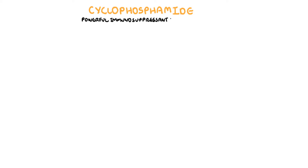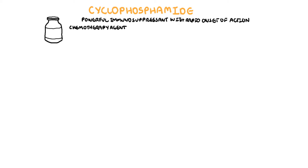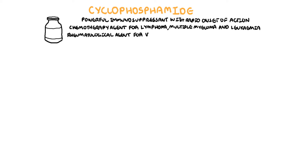Cyclophosphamide is a powerful immunosuppressant with rapid onset of action, days to weeks. It is a popular chemotherapy agent used to treat lymphoma, multiple myeloma, and leukemia. In rheumatology, it has a role in the treatment of vasculitis, life-threatening complications of systemic lupus erythematosus, as well as interstitial lung disease.